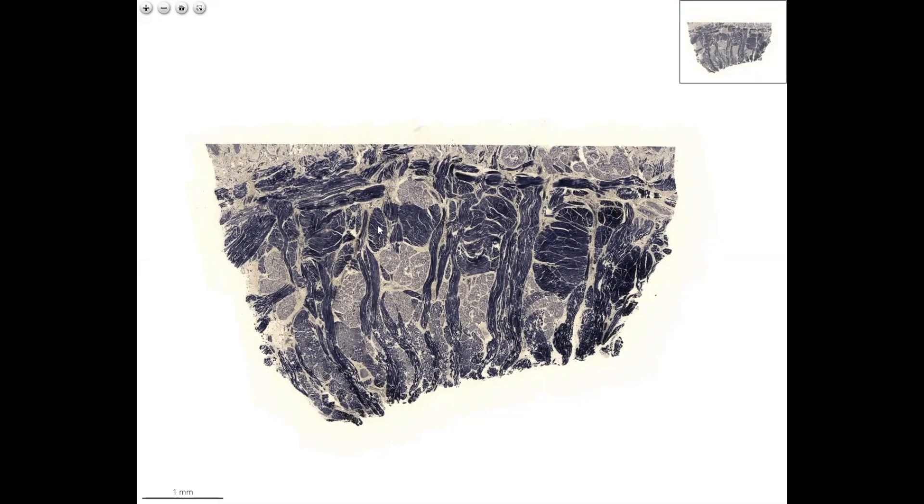Skeletal muscle, striated muscle with iron hematoxylin staining. This piece of tissue was taken from the tongue. In the tongue we have three directional muscles: a sagittal, a longitudinal, and a transverse direction.